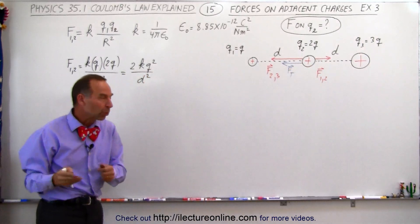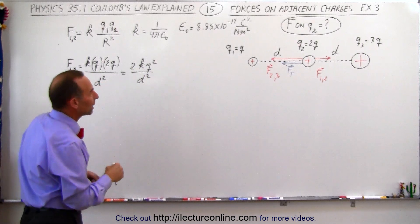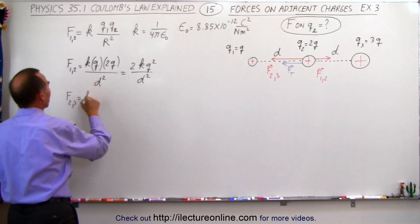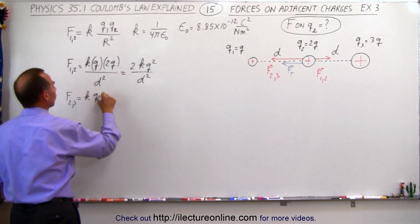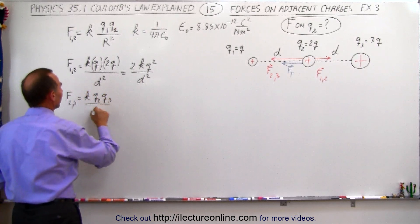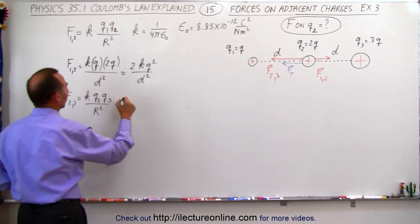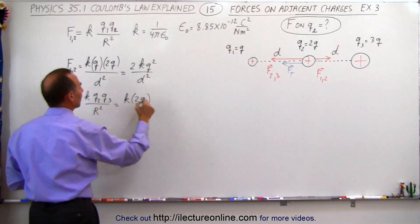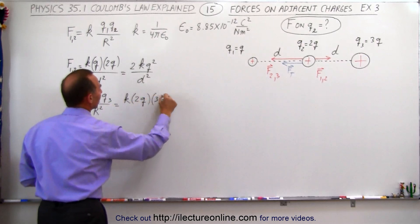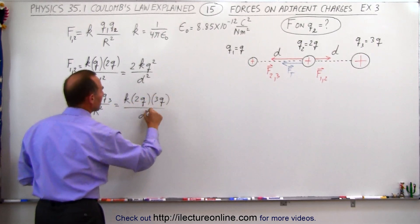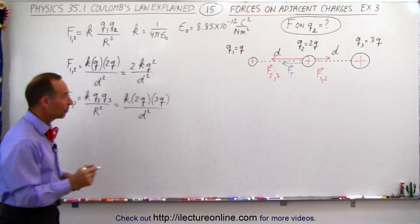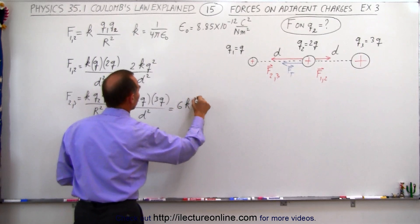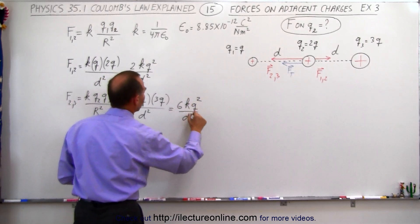Now we're going to find the force between the other two charges, between 2 and 3. The force between 2 and 3 is equal to K times Q2 times Q3 divided by the distance squared. Q2 is 2Q, Q3 is 3Q, and the distance is D squared, so this becomes equal to 6KQ² divided by D squared.